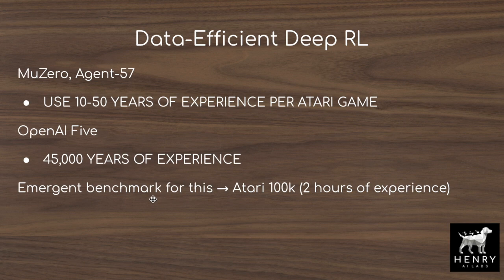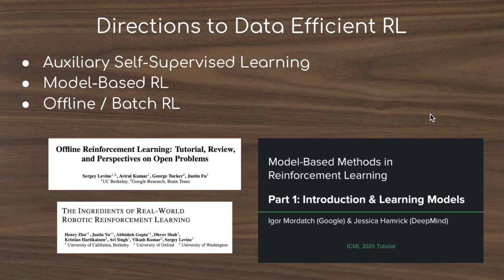The emergent benchmark for exploring data-efficient deep reinforcement learning is Atari 100K, where you are allowed 100,000 steps in an Atari game to master it — equivalent to about two hours of real-time experience. In this video, we're looking at an auxiliary self-supervised learning algorithm. In addition to learning the mapping from high-dimensional states into actions or state-action pairs as in value-based RL, we apply an auxiliary self-supervised learning task.